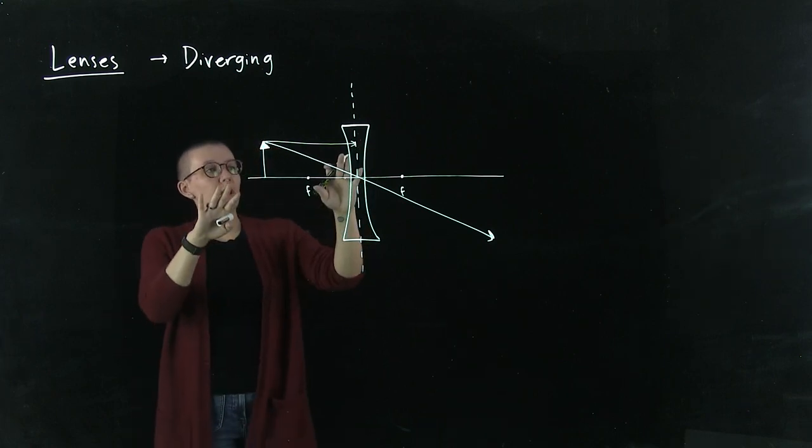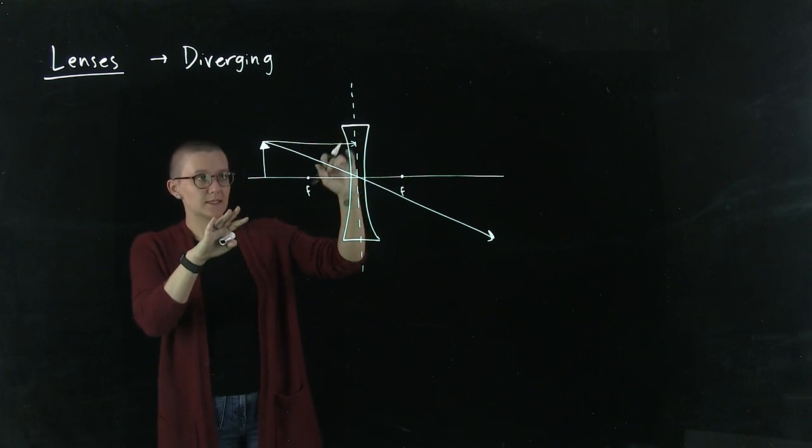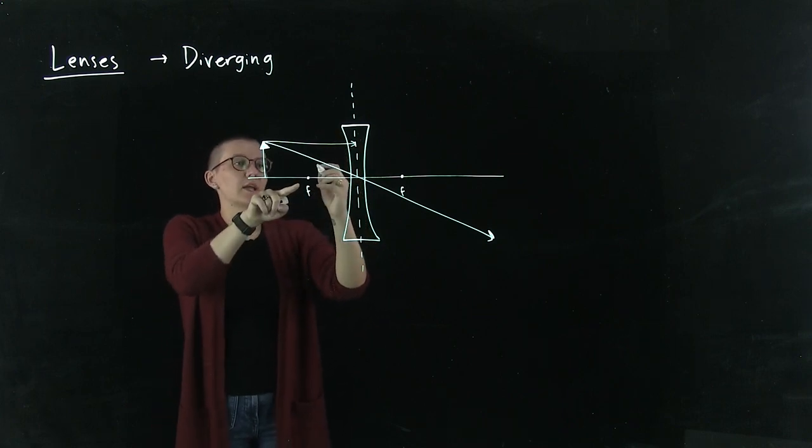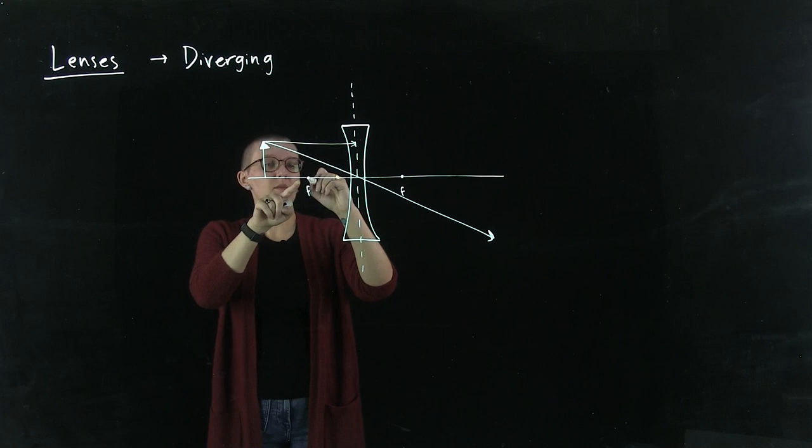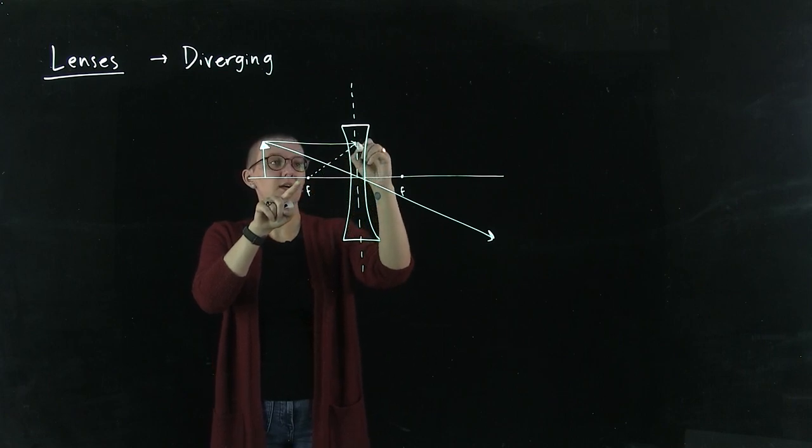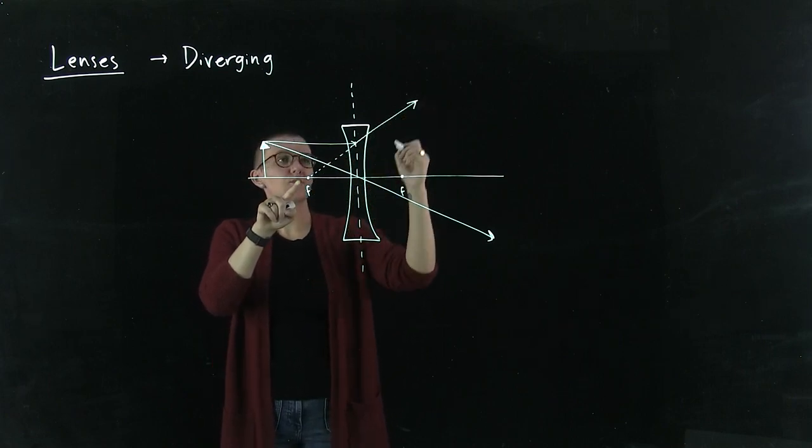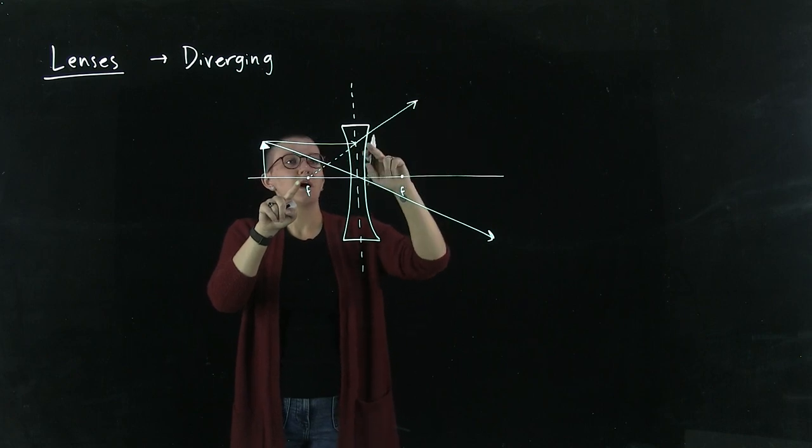Now to figure out how this light is bent, we're going to use this focal point and draw a dashed line here. That tells us where this light ray will refract.